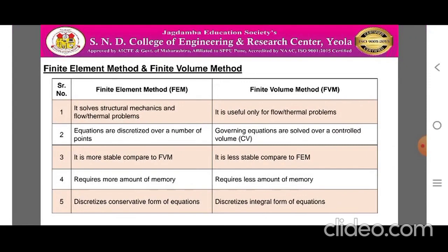Now, the difference between Finite Element Method and Finite Volume Method. Point one: Finite Element Method is used to solve structural mechanics, flow, and thermal problems. Point two: in Finite Element Method, equations are discretized over a number of points, while in Finite Volume Method, the governing equations are solved over a controlled volume. Point three: Finite Element Method is more stable compared to Finite Volume Method, while Finite Volume Method is less stable compared to Finite Element Method.